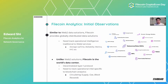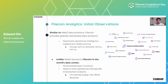Firstly, similar to Web2 data solutions, Filecoin is a data economy consisting of a globally distributed network of servers and clients. This implies that, like Web2 services such as AWS or Azure, we need to track operational intelligences traditional to Web2 data service provision — things like storage uptime and reliability metrics — to properly evaluate the effectiveness of the storage provision service.